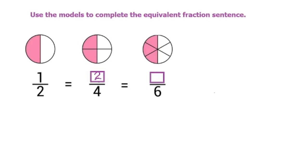We know that fractions are equivalent when the colored area is the same in both models. We can see that this is the same amount of colored area as this one, so we know that the fractions are going to be equivalent. Now we just have to find what the fraction is — we count how many there are.